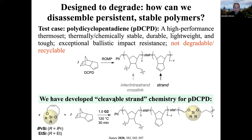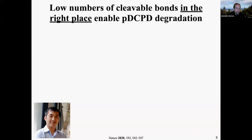Over the last couple of years my laboratory has been developing ways to make PDCPD degradable. Last year we reported on cyclic molecules with oxygen-silicon-oxygen silyl ether groups embedded within them. We can tune the reactivity and degradability of these silyl ethers by changing the chemical substituents attached to the silicon atom. By simply mixing this molecule in with dicyclopentadiene during a traditional curing process, we can generate PDCPD samples that have these oxygen-silicon-oxygen linkages embedded within their strands.